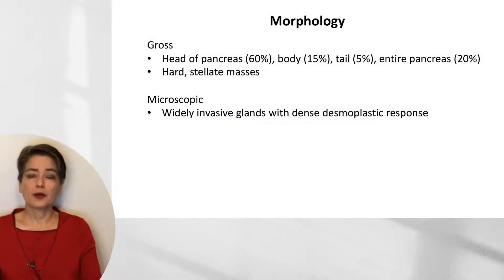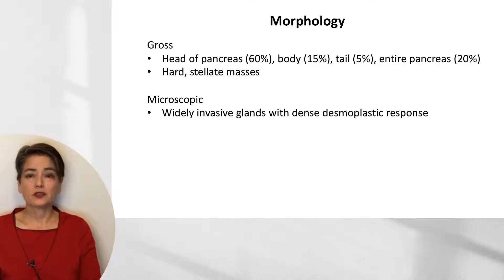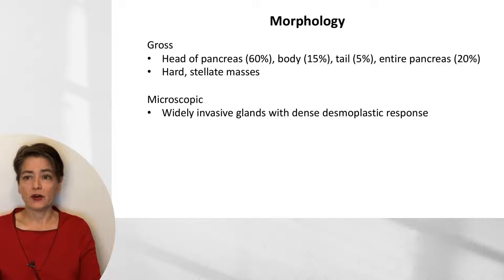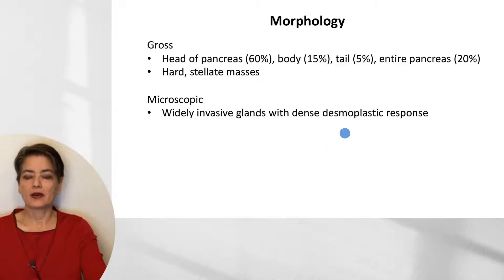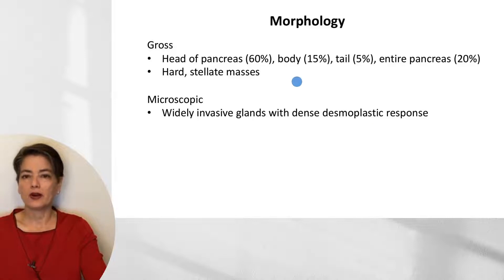Regarding the morphology of pancreatic adenocarcinoma: about 60% of cases arise in the head of the pancreas, 15% in the body, 5% in the tail, and 20% involve the entire pancreas. Microscopically, a very dense desmoplastic response characterizes this tumor — pancreatic carcinoma likely produces more collagen than almost any other malignancy. Grossly, these tumors appear as very firm, hard stellate masses.